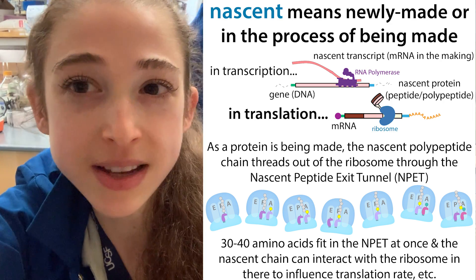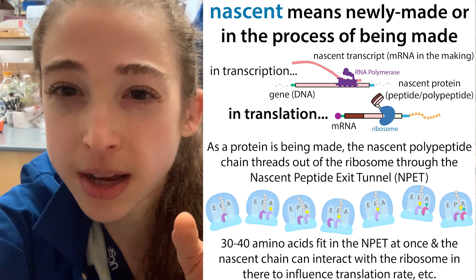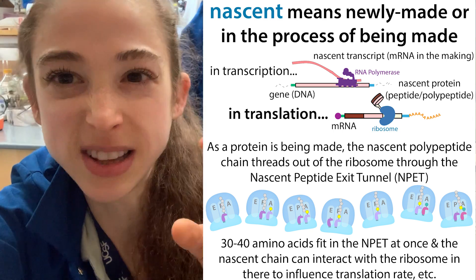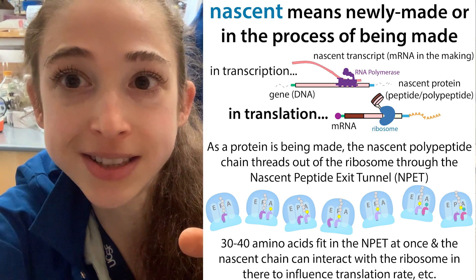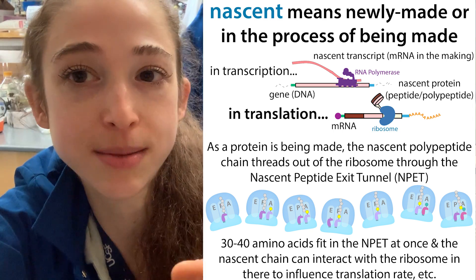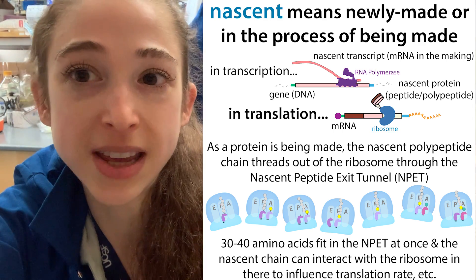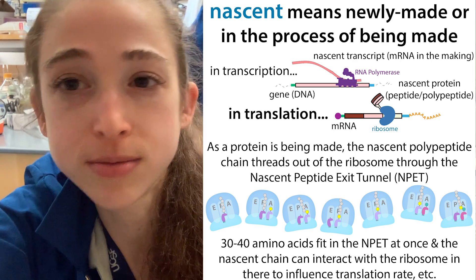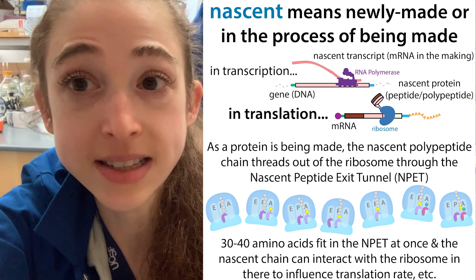There are some cool things with nascent chains: sometimes if they have sequences that are really awkward, like a bunch of prolines or arginines, they can actually cause stalling of the ribosome.